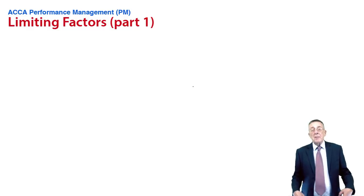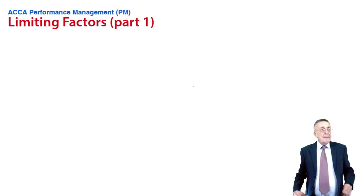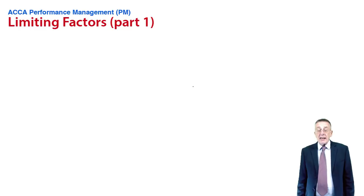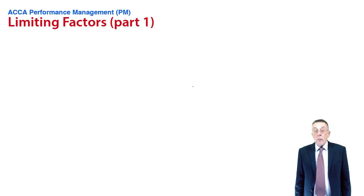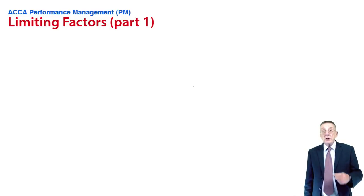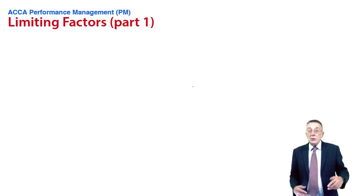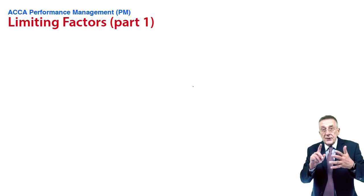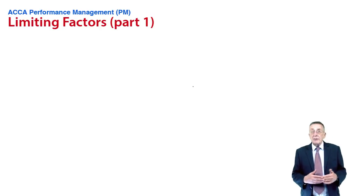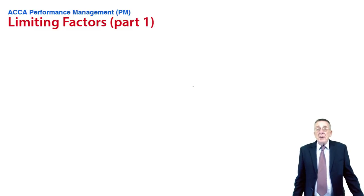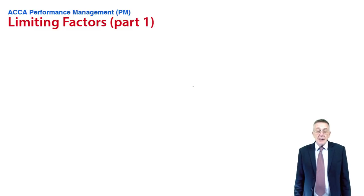I explained what contribution meant in the previous lecture on throughput accounting. One way we could have made the question a little bit longer is instead of telling you the contribution, I could have told you the individual factors, you know, the selling price, each of the variable costs. But you know how to do that from the previous lecture.